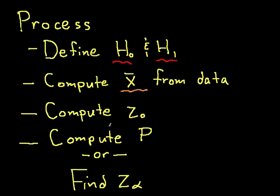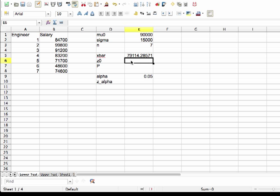So the next step is to compute z0, our test statistic. To compute z0, we take the sample mean, which we just computed. We subtract from the sample mean the mean under hypothesis 0, which in this case is, again, $90,000. We then divide by the standard deviation divided by the square root of the number of samples.